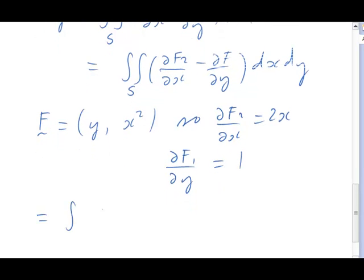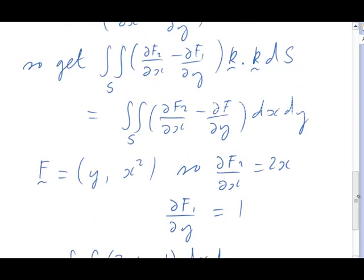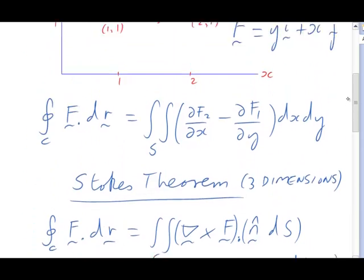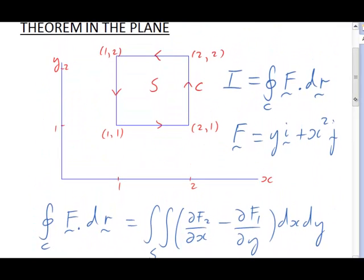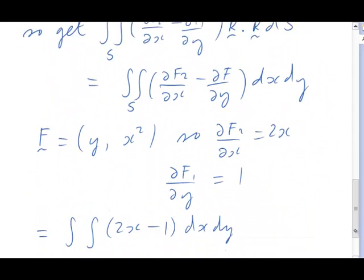So we get the integral, and we have ∂f2/∂x, that's 2x, minus ∂f1/∂y, that's 1, dx dy. And what about the limits? Well, they're just the limits appropriate for the square. That's both x and y here running between 1 and 2. So 1 to 2 in both cases.